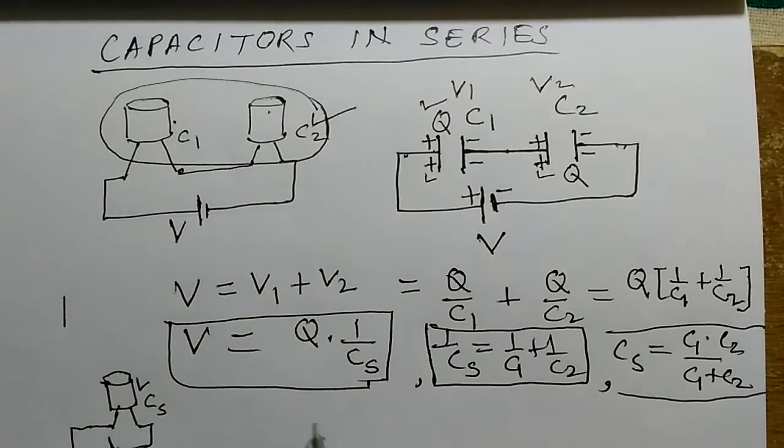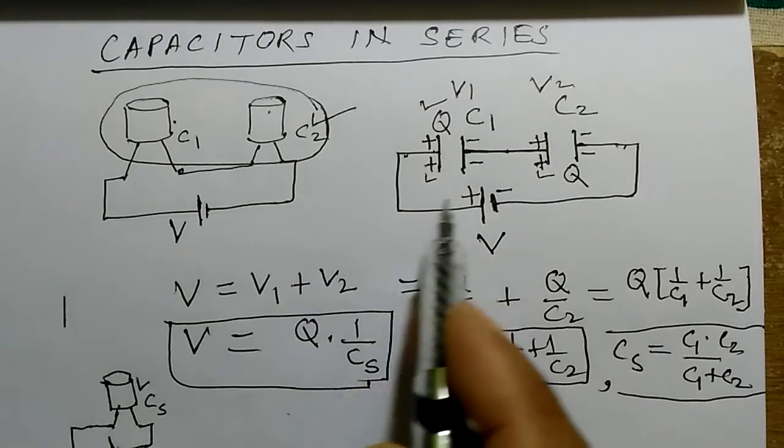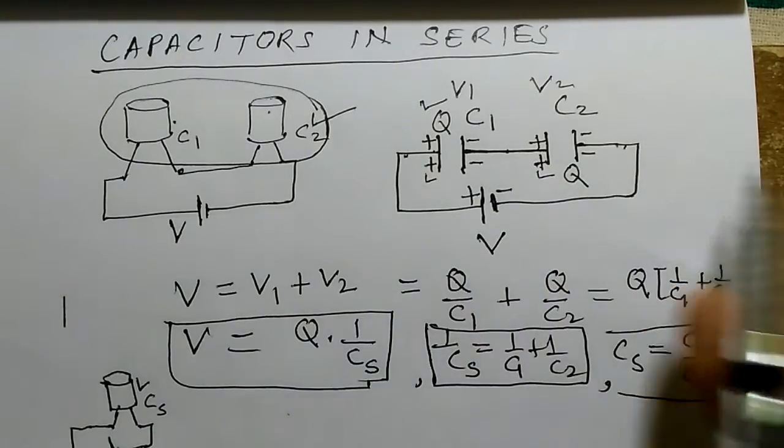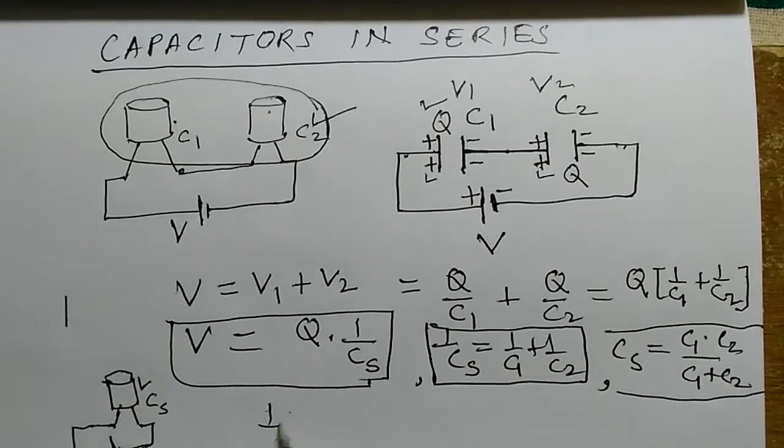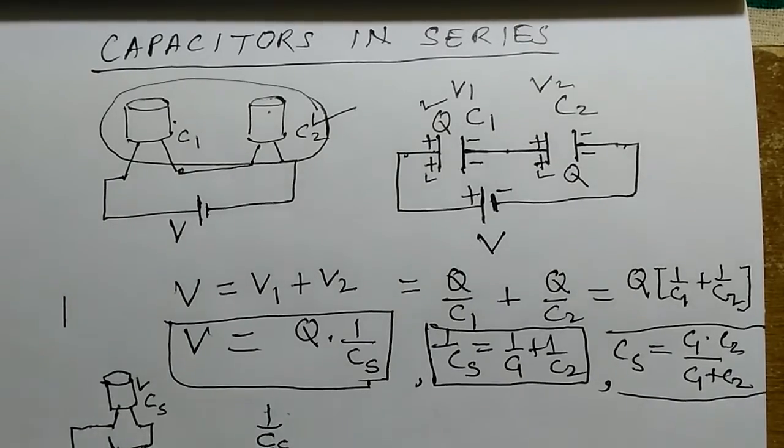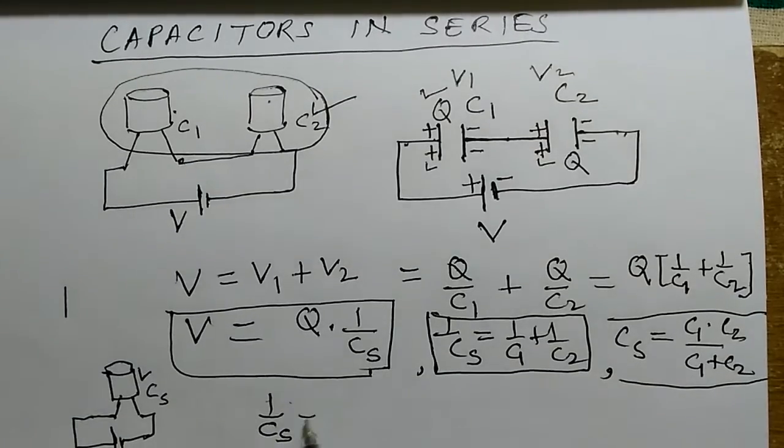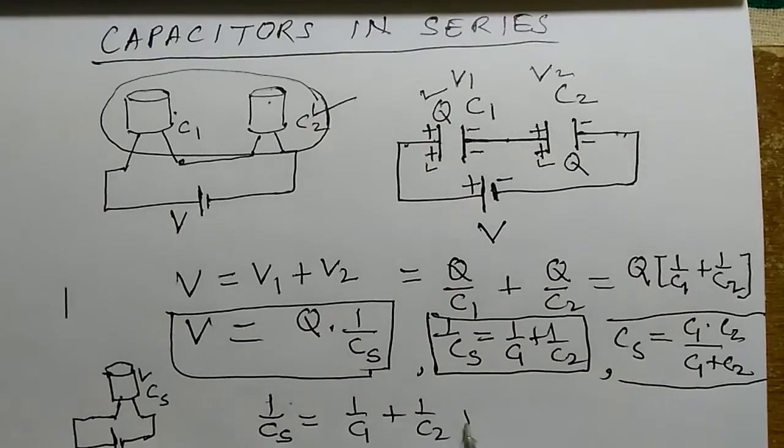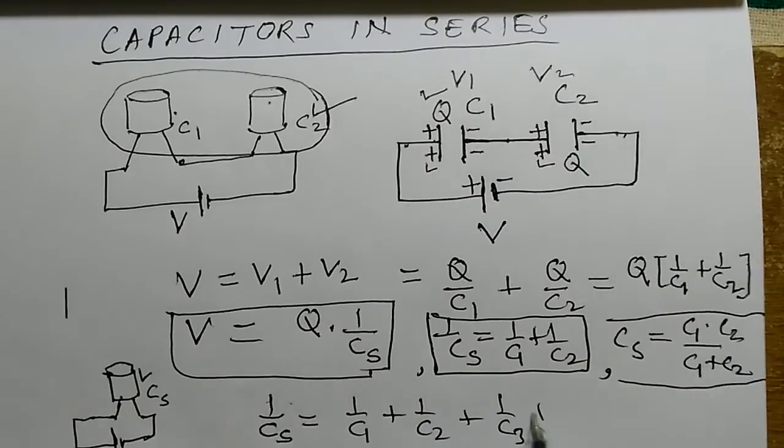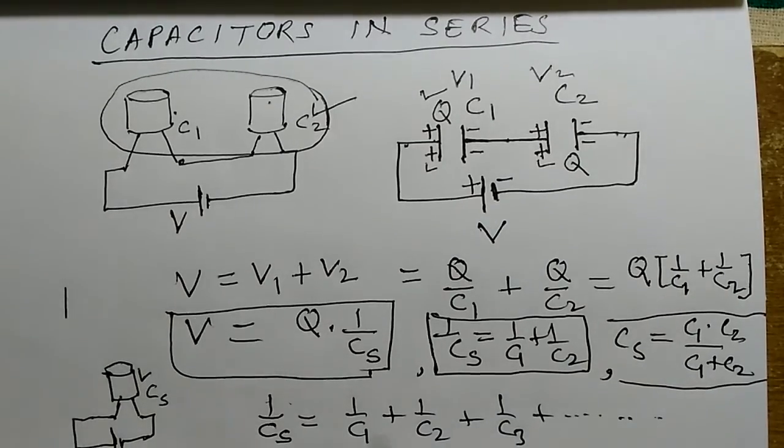If N capacitors are connected in series one after another, then the combined capacity can be calculated as 1 by Cs equals 1 by C1 plus 1 by C2, and so on. This formula will be used.